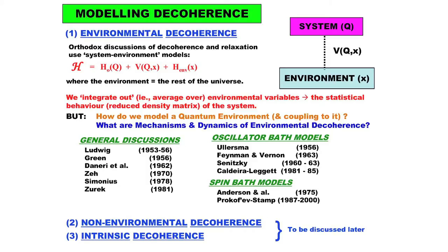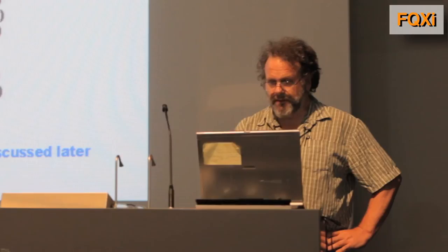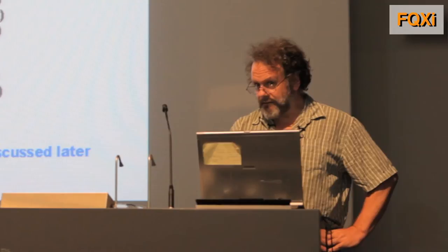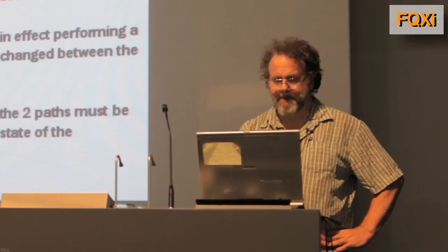What all the models have in common is that they attempt to model the dynamics of some quantum system with a coordinate Q by coupling it to an environment and then averaging over the environmental behaviour to get the behaviour of the system. The general idea is that you find out what is the dynamics of the system in the form of its reduced density matrix. I'll be saying a little more about that for people who are not physicists. But what I want to emphasize is that this is not the only kind of decoherence that you can have; we'll talk about some other kinds as well.